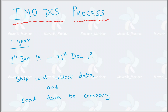Now let us see what the IMO DCS process is. From 1st January to 31st December 2019 — one full year — the ship will have to collect the fuel oil data and send it to the company.